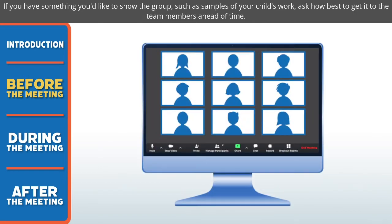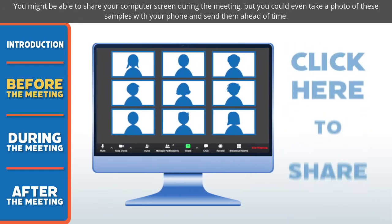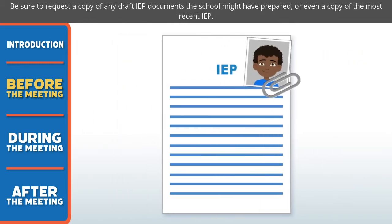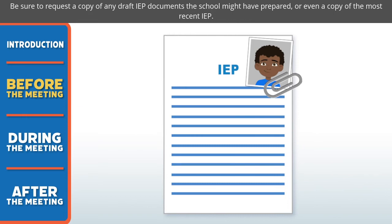If you have something you'd like to show the group, such as samples of your child's work, ask how best to get it to the team members ahead of time. You might be able to share your computer screen during the meeting, or you could take a photo of these samples with your phone and send them ahead of time. Be sure to request a copy of any draft IEP documents the school might have prepared, or even a copy of the most recent IEP.